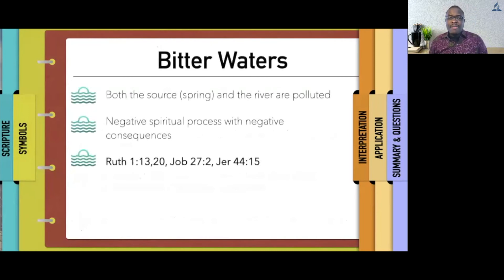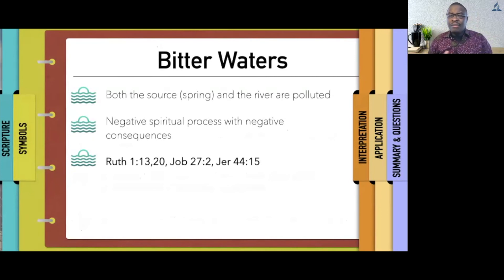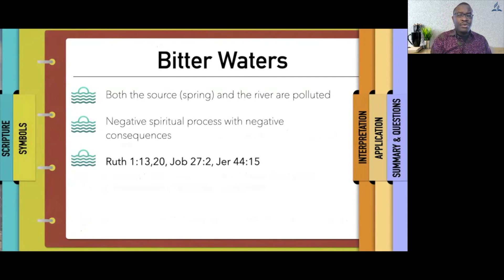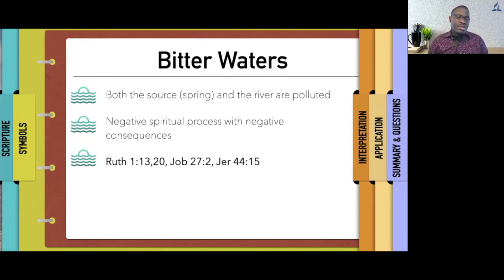The bitter waters refer to both the source and the river being polluted — the spring and the streams are polluted. This is a negative spiritual process with negative consequences. When you corrupt the source of truth or the source of pure nourishing water, then the entire consequence is corruption. Ruth chapter 1, Job 27, and Jeremiah 44 will give you that picture.